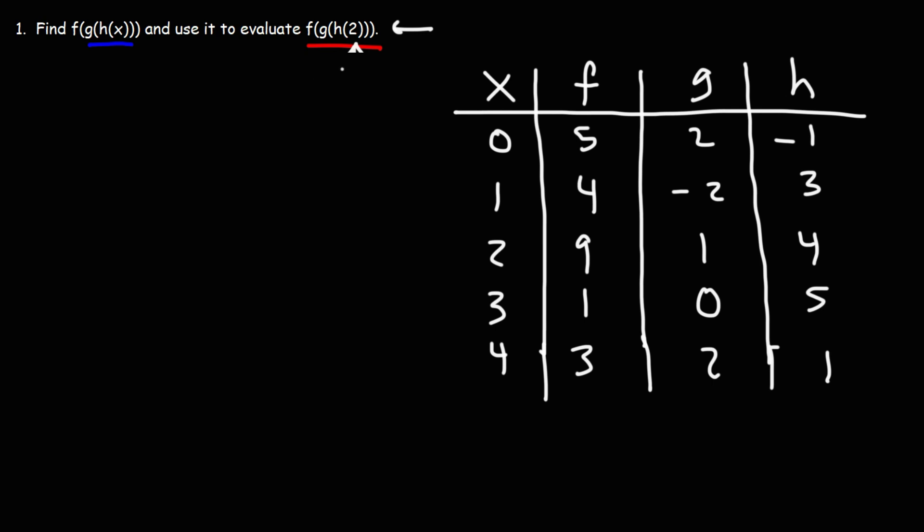Just like before, we're going to work from the inside and then work outward. So first, what is h of 2? h of 2. So here's 2, here's h. They intersect at 4. So h of 2 is 4.